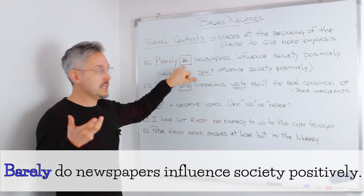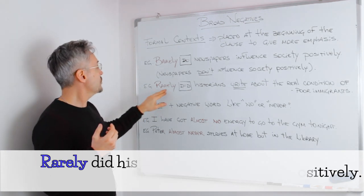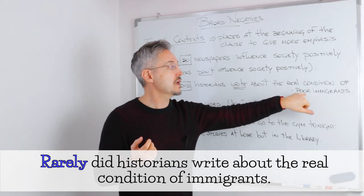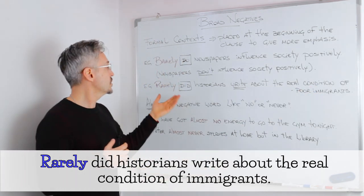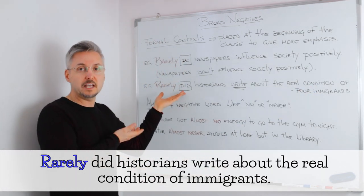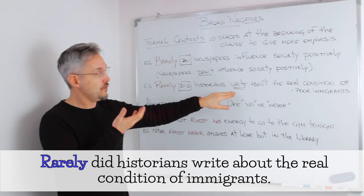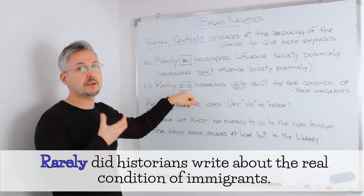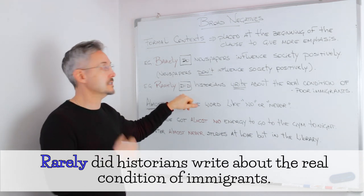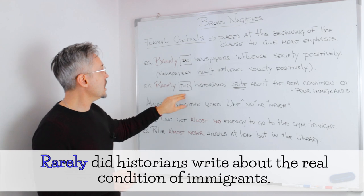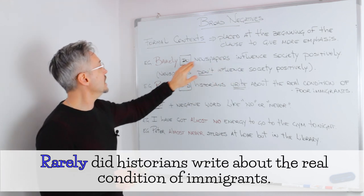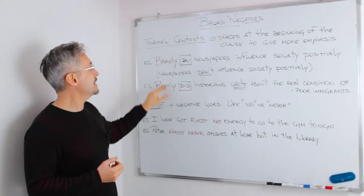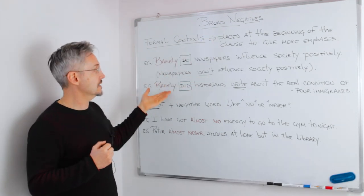Another example could be: rarely did historians write about the real condition of poor immigrants. So in this case we had 'did', and the verb stays the base of the verb because we have 'did' — the auxiliary of the past simple. So pay close attention to these formal contexts if you want to use the broad negative at the beginning of a sentence.